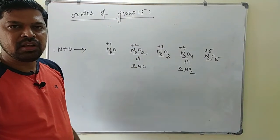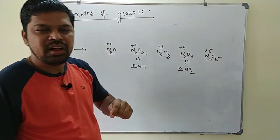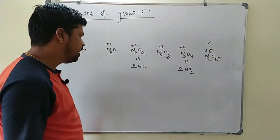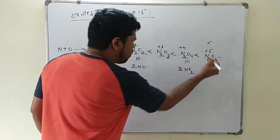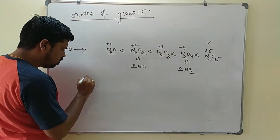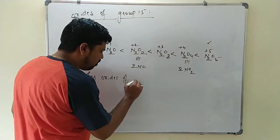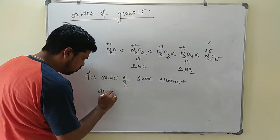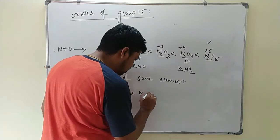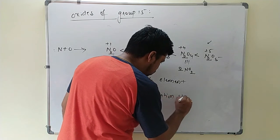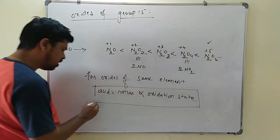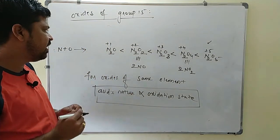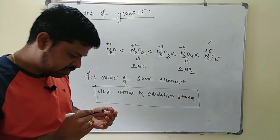For oxides of the same element, the acidic nature is directly proportional to the oxidation state. Higher the oxidation state, more acidic the oxide. Among nitrogen's oxides, N2O5 has the highest oxidation state (+5) and is therefore the strongest acid. Acidic nature increases from N2O to N2O5.